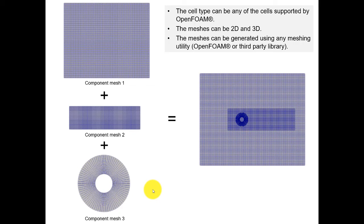The beauty of this method is that you can add as many bodies as you want, support large displacements and rigid body motion — which you can do easily using mesh morphing. In OpenFOAM you can use any cell type supported by the solver, work in 2D, and use any meshing utility like snappyHexMesh, cfMesh, or third-party tools like Fluent, pointwise, or gmesh to generate your meshes.